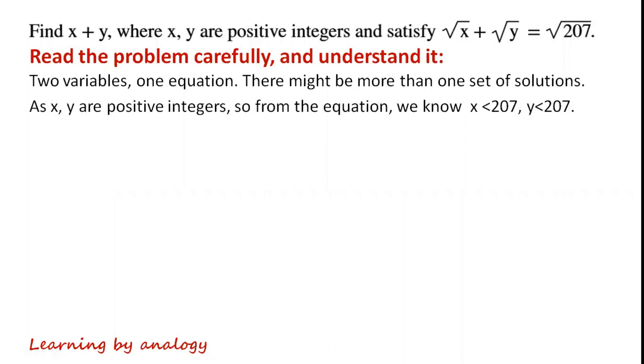As x, y are positive integers, from the equation we know that x is less than 207 and y is less than 207. Find x plus y.